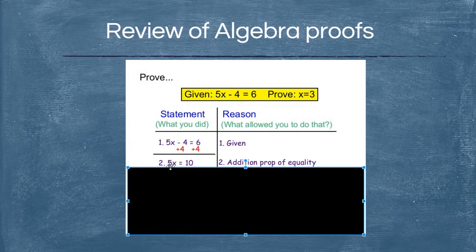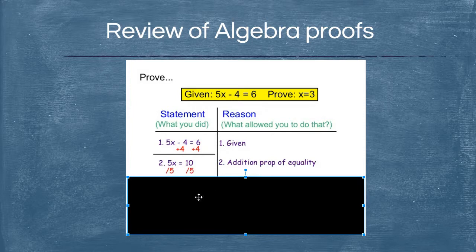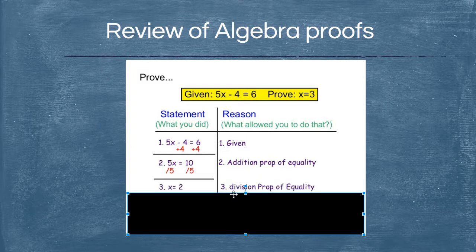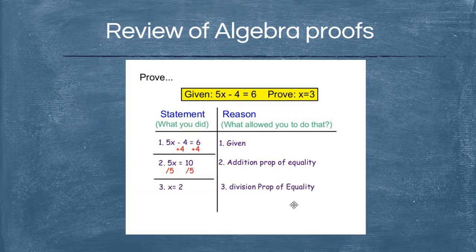Most of you probably said: I need to get rid of that 5, so I'll divide both sides by 5. You are dividing both sides of your equation, so if the previous step was the addition property of equality, you can probably guess the next reason is the division property of equality. This is what your two-column proof should look like — always start with the given information, follow your thought process just as you would when solving, and each step should have a reason to support your new statement.